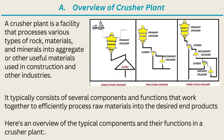Overview of the crusher plant and its components and functions. A crusher plant is a facility that processes various types of rock, materials, and minerals into aggregate or other useful materials used in construction and other industries. It typically consists of several components and functions that work together to efficiently process raw materials into the desired end products. Here is an overview of the typical components and their functions in a crusher plant.